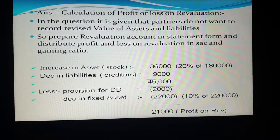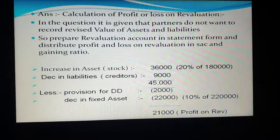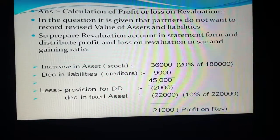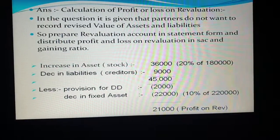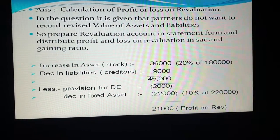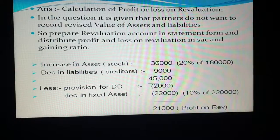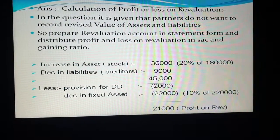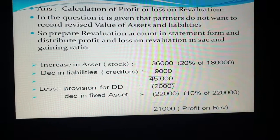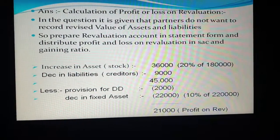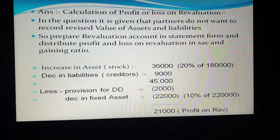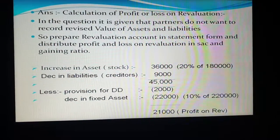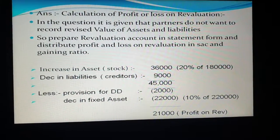Two transactions result in loss on revaluation: provision for doubtful debts increased by 2,000, and decrease in fixed asset by 10% — 10% of 2,20,000 is 22,000. So total loss is 24,000, and the net profit on revaluation is 21,000.